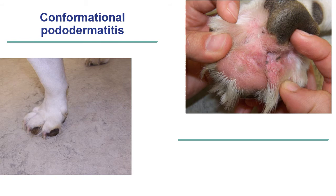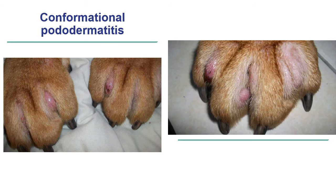These lesions often become secondarily infected, leading to secondary deep pyoderma. Here we can see nodules visible from the dorsal web in a British Bulldog where lesions involve most of the interdigital skin. The concurrent presence of atopic dermatitis exacerbates the severity of clinical signs, because in addition to the mechanical problem and the foreign body-like reaction, you also have inflamed skin, often with secondary infections.